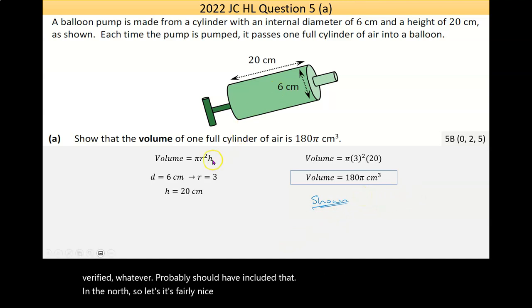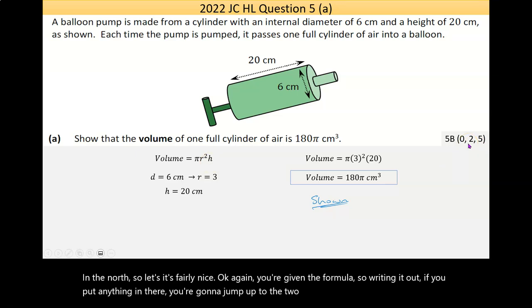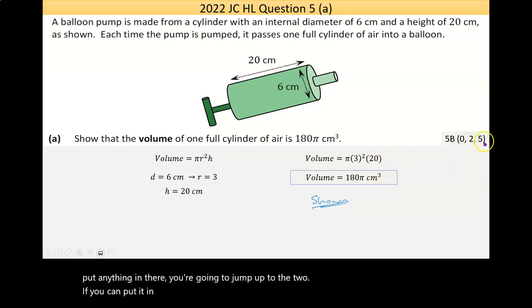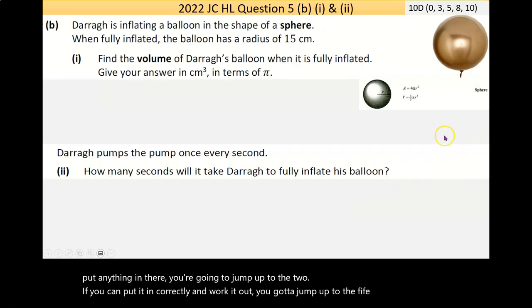It's fairly nice. You're given the formula, so writing it out, if you put anything in there you're going to jump up to the 2. If you can put it in correctly and work it out, you're going to jump up to the 5.